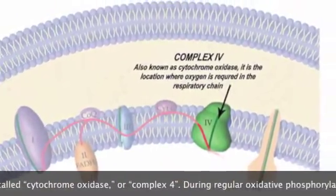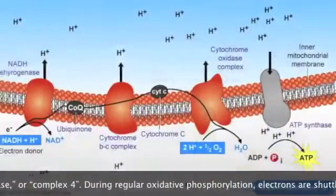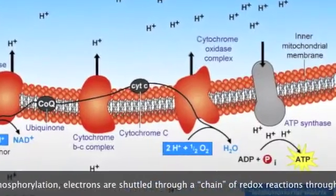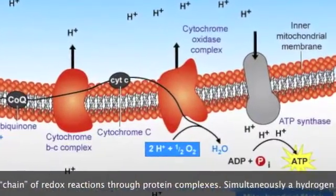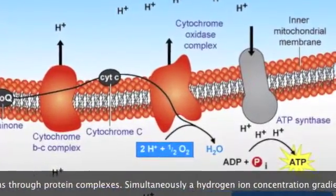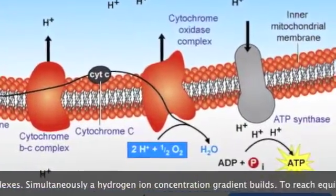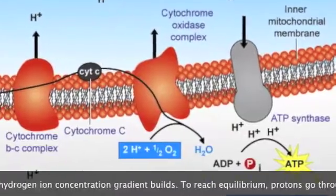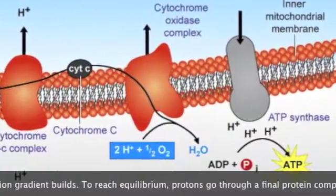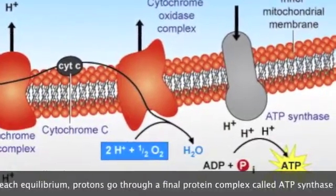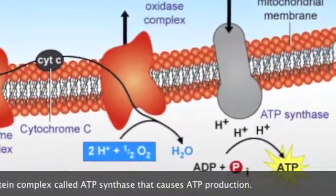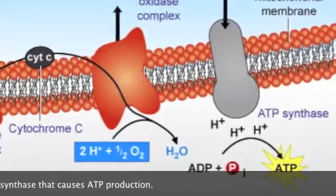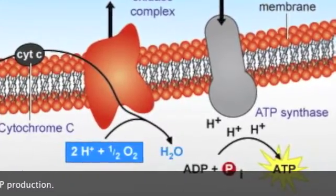During regular oxidative phosphorylation, electrons are shuttled through a chain of redox reactions through protein complexes. Simultaneously, a hydrogen ion concentration gradient builds. To reach equilibrium, protons go through a final protein complex called ATP synthase to produce ATP.